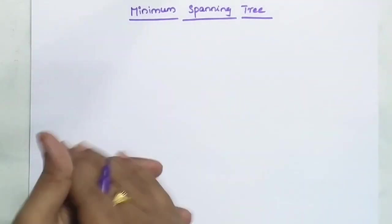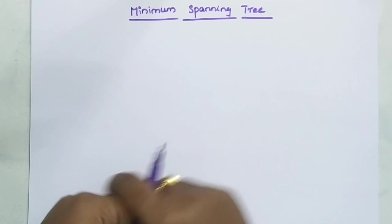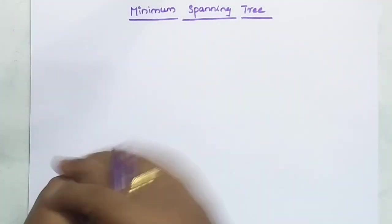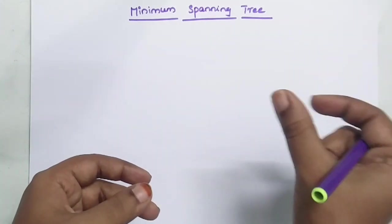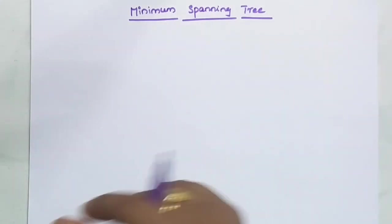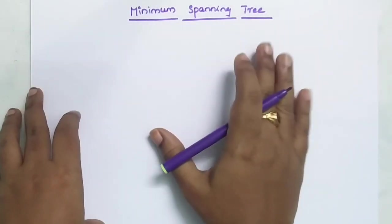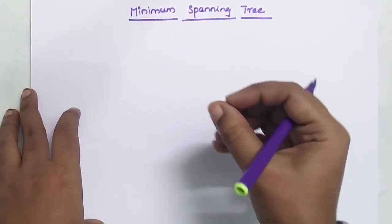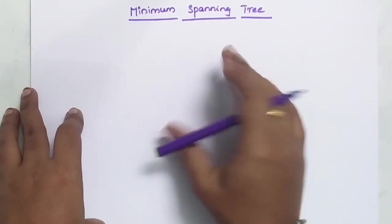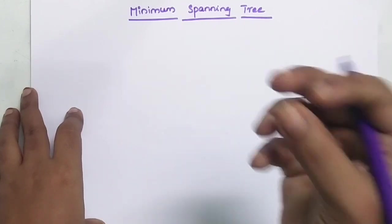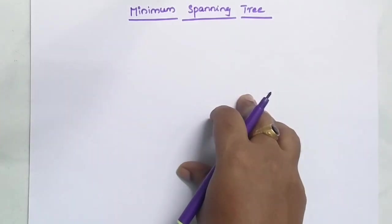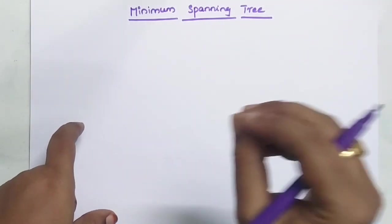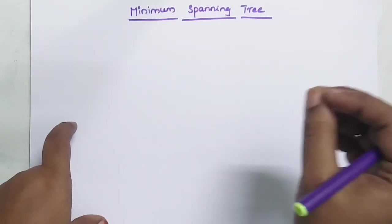Hi students, so here is the topic: Minimum Spanning Tree. To understand minimum spanning tree, first we need to know what spanning tree is, and then we'll understand what minimum spanning tree means. We will look at two different techniques: number one, Prim's algorithm, and number two, Kruskal's algorithm. Based on these two algorithms, we will perform minimum spanning tree.